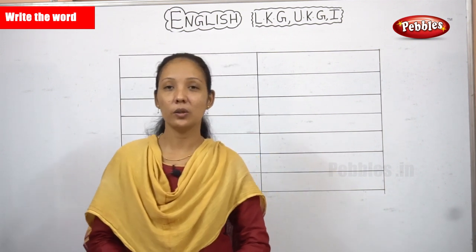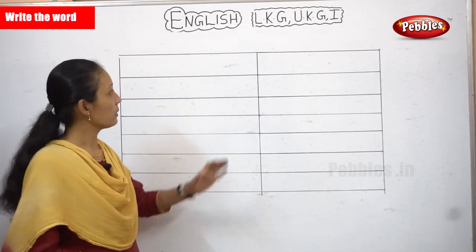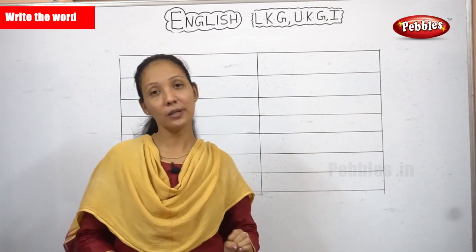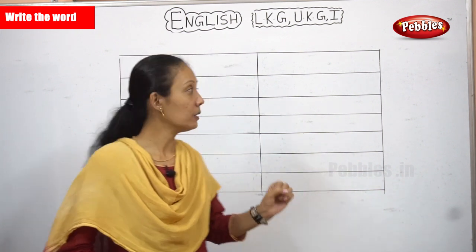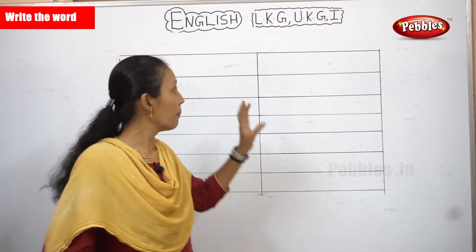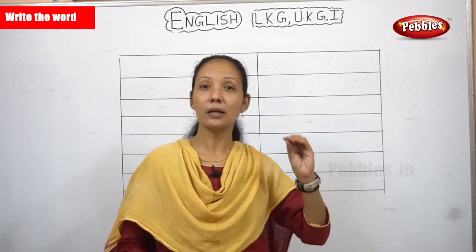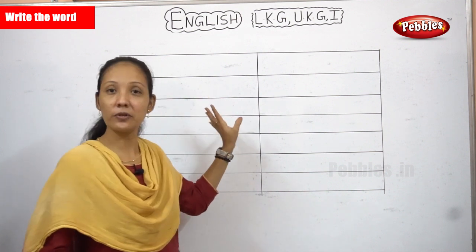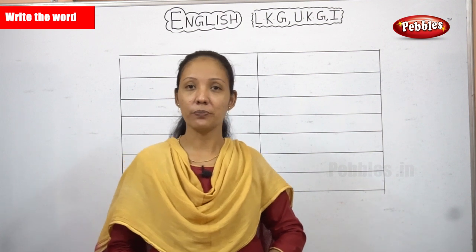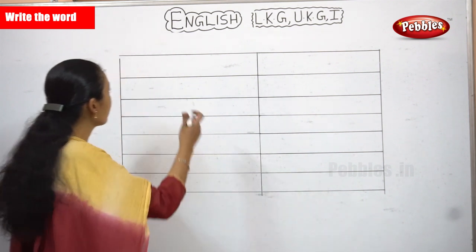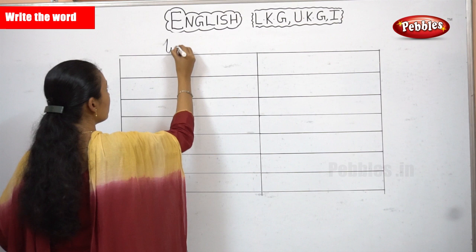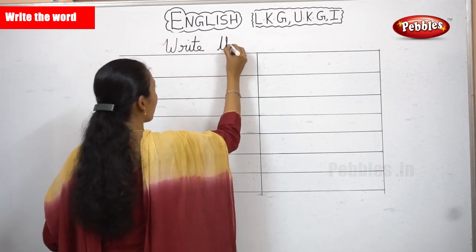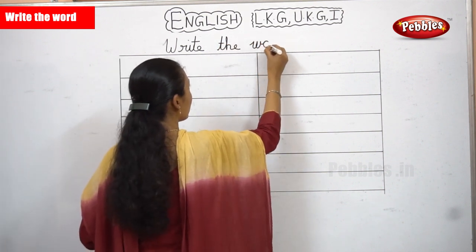Now we are going to learn something called 'Write the Word.' Write the word means I will be drawing a picture. This is to make it easy for children to identify the picture and meanwhile to know the spelling of those particular pictures. With the help of the picture, you can learn the spelling also. By seeing the picture, you will know the word, and meanwhile you can learn the spelling too.